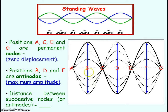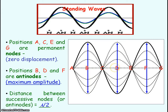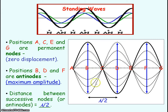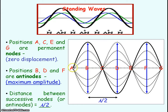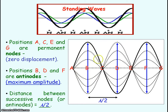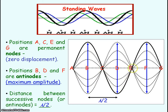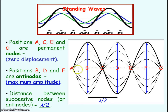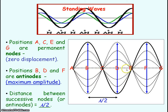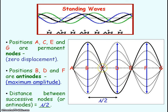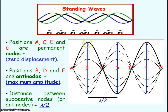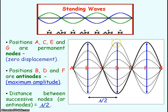The distance between successive or consecutive nodes or anti-nodes represents half a wavelength. So A to C is half a wavelength. If we complete the full wavelength, A to E would represent a full wavelength. The distance between consecutive nodes or consecutive anti-nodes is half a wavelength.